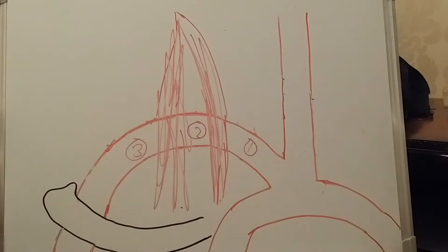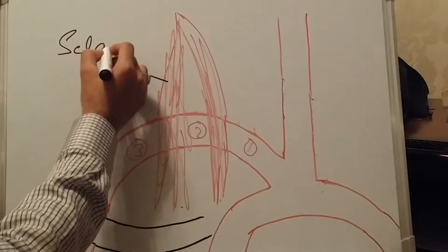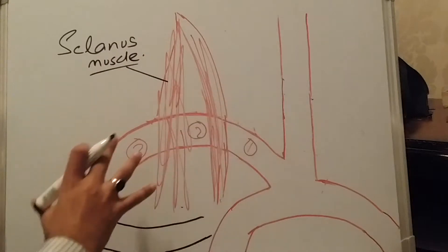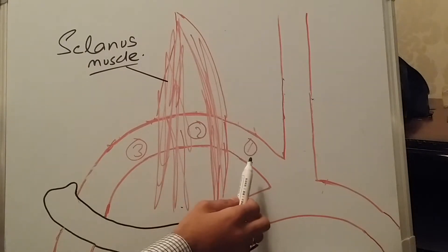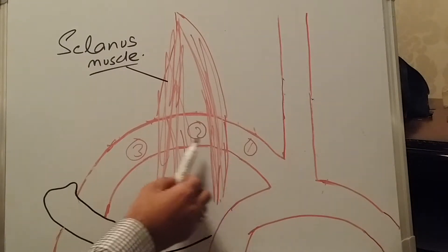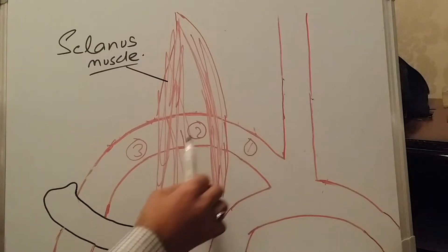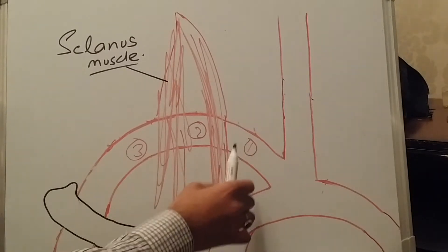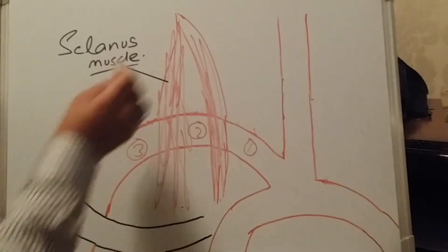According to the scalenus muscle, the subclavian artery is divided into three main parts: before the scalenus muscle, between the scalenus muscles, and after the scalenus muscle. These three regions give rise to different types of branches to different parts of the body. We will discuss how many branches each part gives rise to and what parts of the body are supplied by these branches.